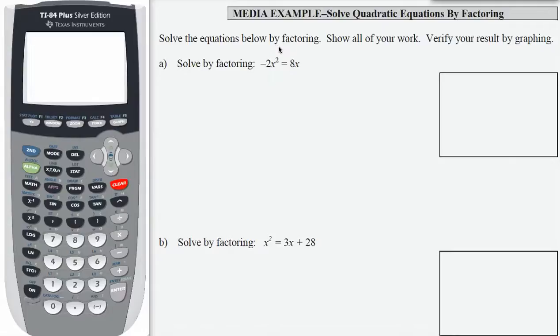Here we're asked to solve the equations by factoring, show our work, and then verify by graphing. We have the original equation, negative 2x squared equals 8x. This is a quadratic equation.